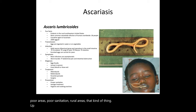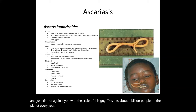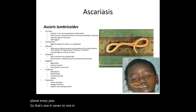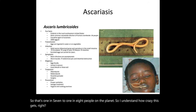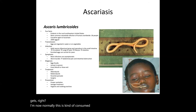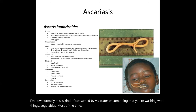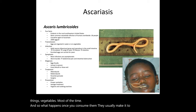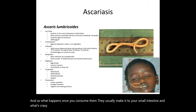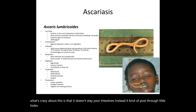To give you the scale: Ascariasis hits about a billion people on the planet every year — that's one in seven to one in eight people. Normally it's consumed via water or when washing things like vegetables. Once consumed, they make it to your small intestine, but what's crazy is that they don't stay there — they poke through little holes and enter your circulation, your veins and arteries.